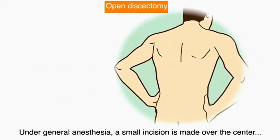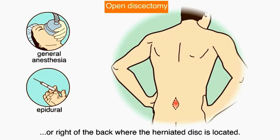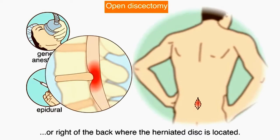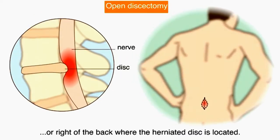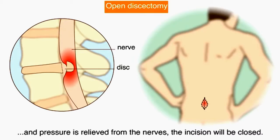Under general anaesthesia, a small incision is made over the centre or right of the back where the herniated disc is located. Once the herniating part has been removed and pressure is relieved from the nerves, the incision will be closed.